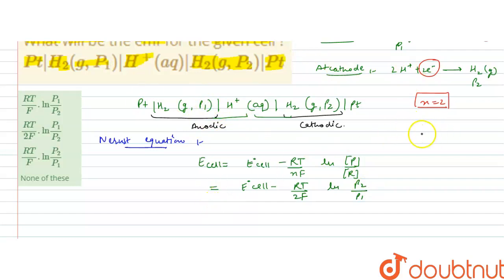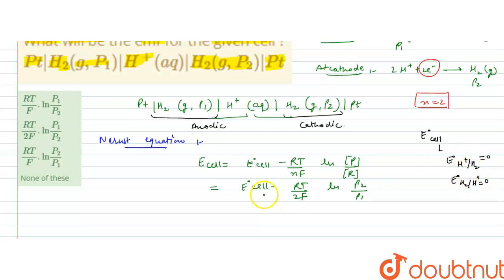Now, E°_cell is the standard electrode potential. E° for H⁺/H₂ is zero, and E° for the standard hydrogen electrode is also zero. Therefore, E°_cell = 0.